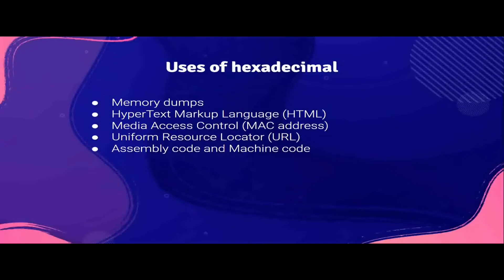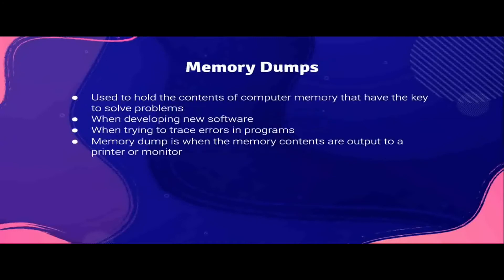Uses of hexadecimal include memory dumps, hypertext markup language (HTML), media access control (MAC address), uniform resource locator (URL), and assembly code and machine code. Memory dumps are used to hold the contents of a computer memory that have the key to solve problems — basically they hold the solutions. This is used when developing new software or when trying to trace errors in programs. A memory dump is when memory contents are output to a printer or a monitor.